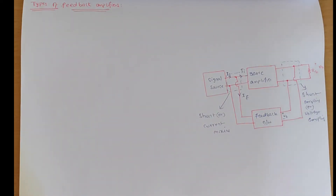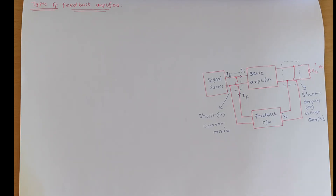Good morning students. Today we discuss about the types of negative feedback amplifiers. In the previous session, we discussed that feedback is classified into two types: positive feedback and negative feedback. Positive feedback is preferred in oscillator circuits, and negative feedback is preferred in amplifiers because negative feedback can reduce distortion and increase bandwidth. Because of these reasons, we choose negative feedback in amplifiers.